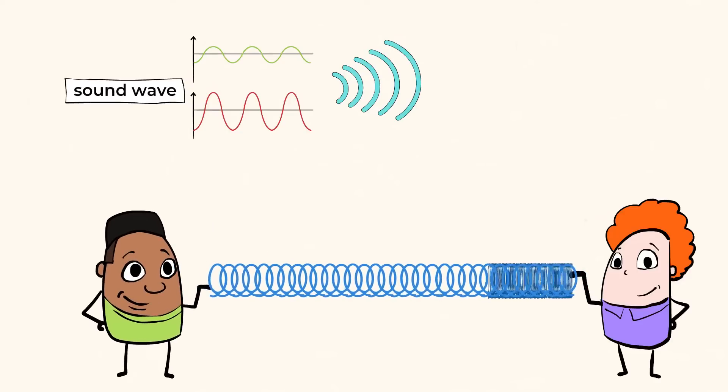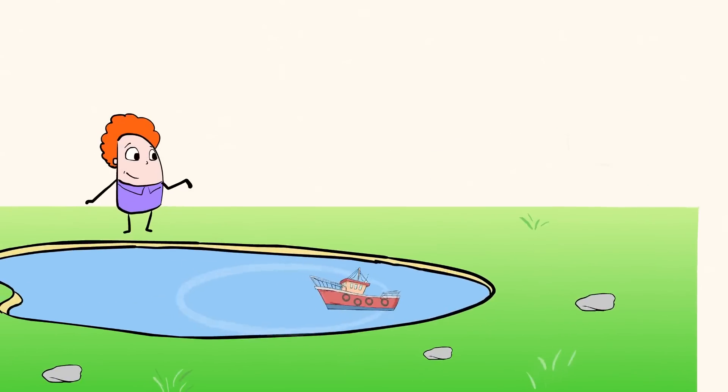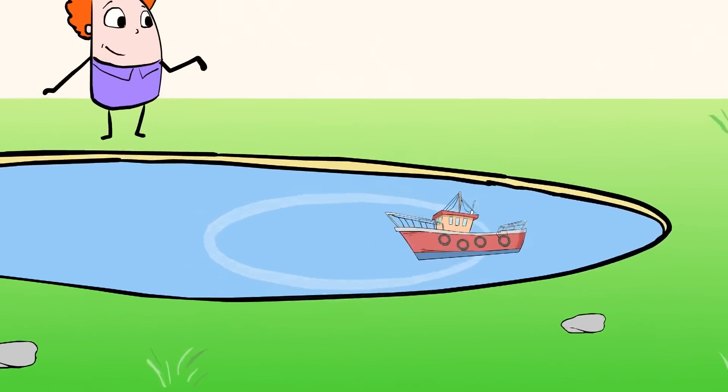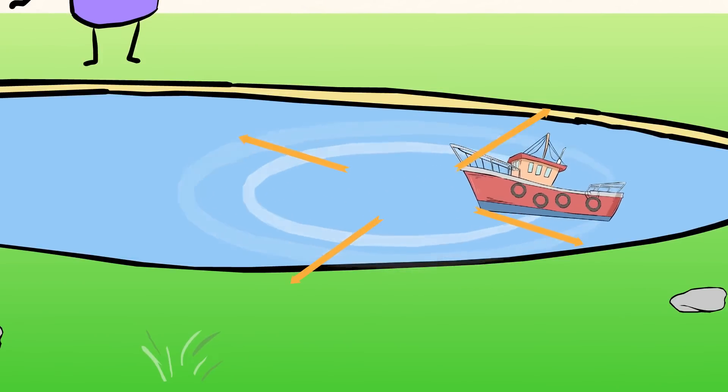The person on the left initiates the wave when they move it. Just like the pebble being thrown in the water started the waves in the pond. Then the wave continues from that point and travels all the way to the other side.